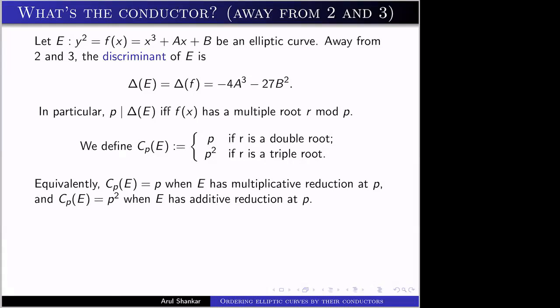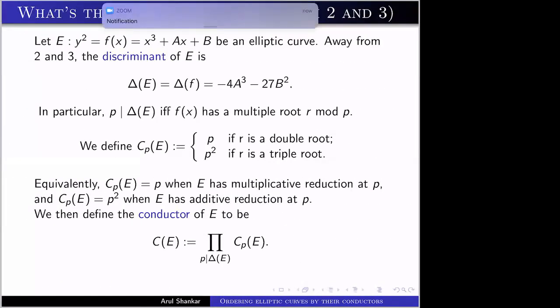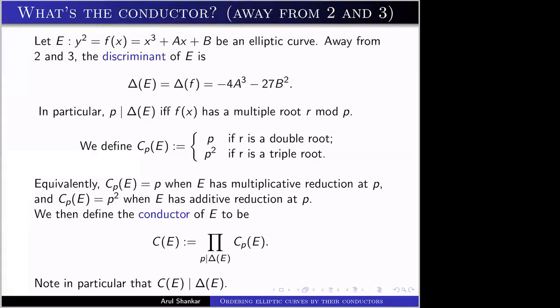Once we have c_p, we define the conductor multiplicatively: the conductor of E is the product over all primes p dividing the discriminant of c_p(E). Note that the conductor divides the discriminant, because a double root gives p | Δ and a triple root gives p² | Δ. However, the conductor does not have to equal the discriminant — p^100 could divide the discriminant, but only p or p² will divide the conductor.